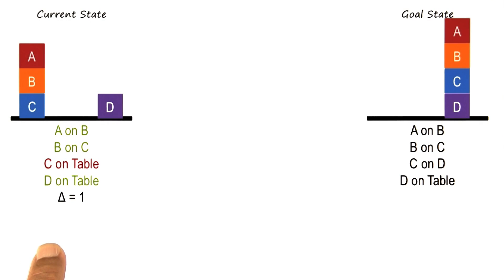Let us start from where we left off when we finished mean sense analysis. This was the current state, this was the goal state.